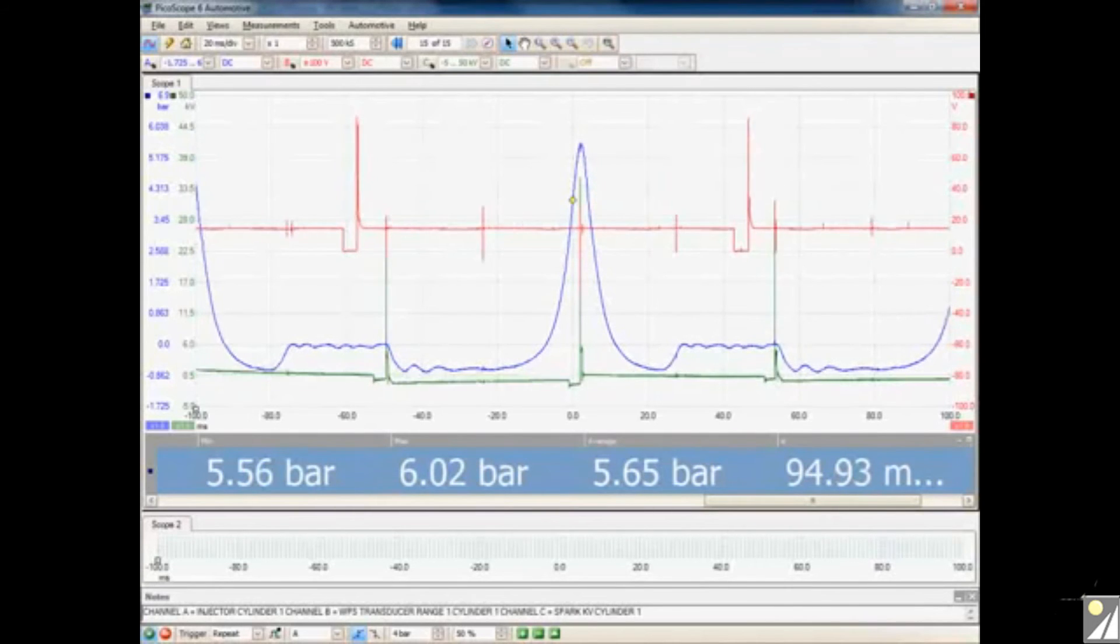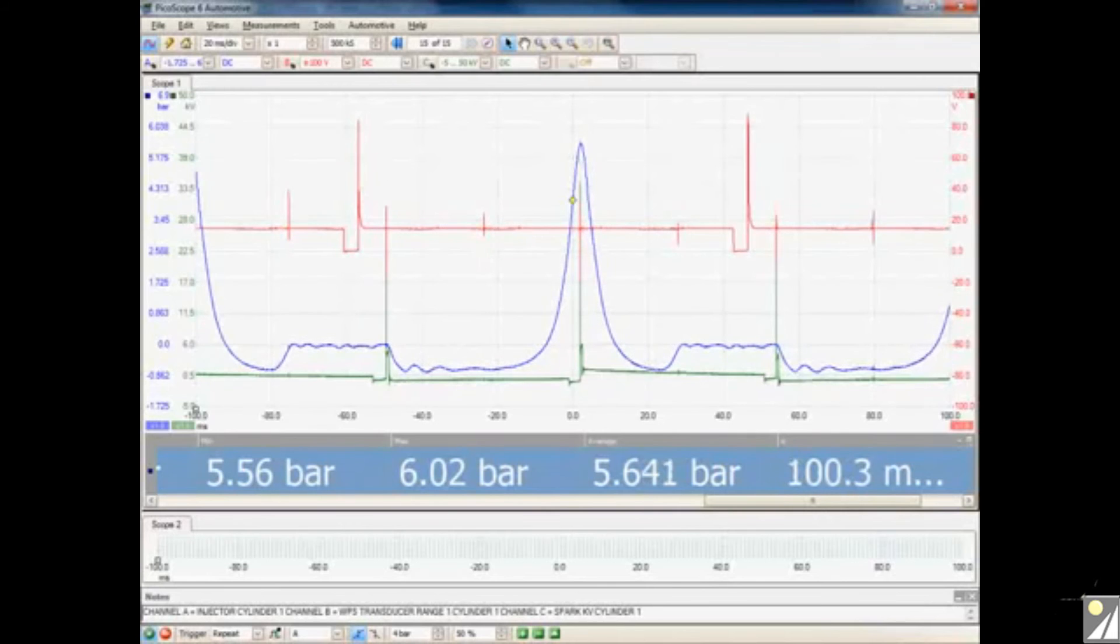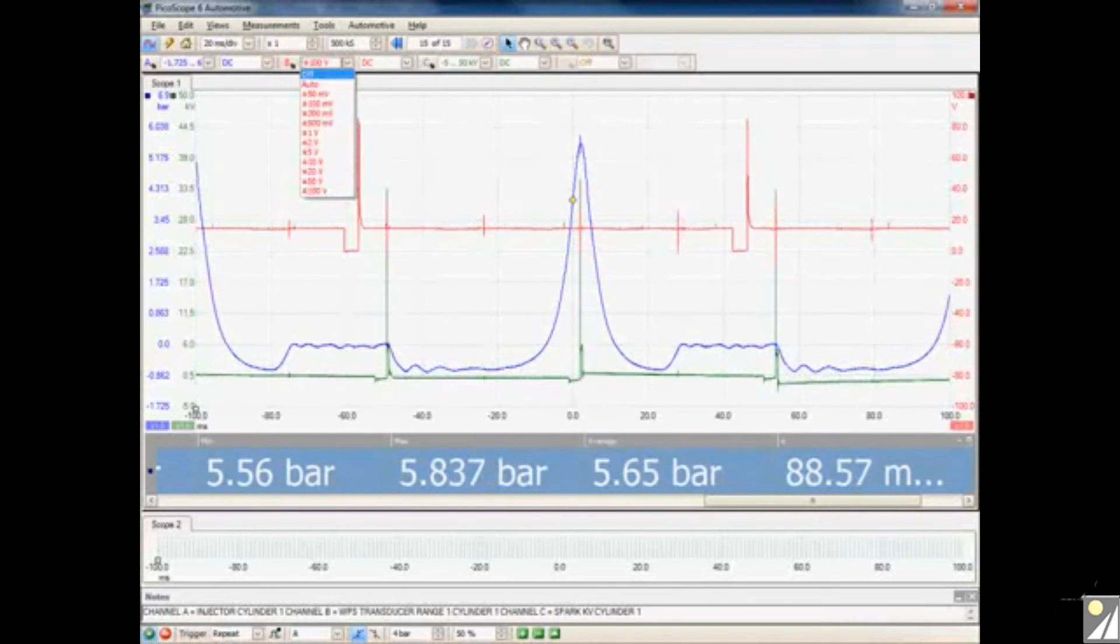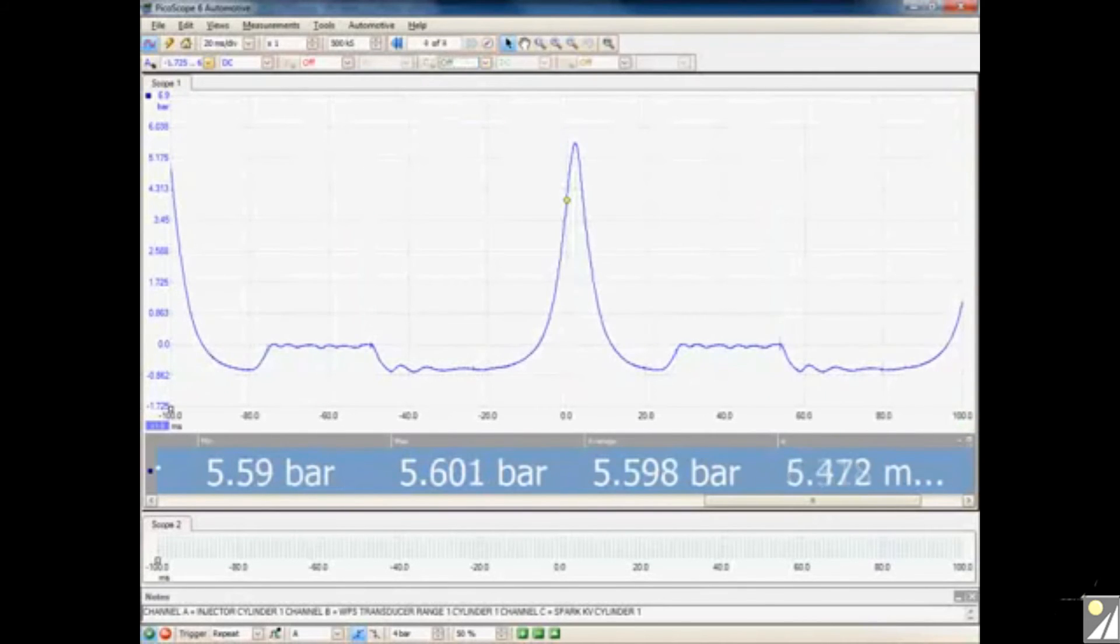So what I need to do is I need to just slightly tweak this waveform. I'm going to remove the injector signal as we don't need to see that anymore. I'm also going to remove the secondary signal as we don't need that either. I'm going to change the setting for the transducer as now we're going to be looking at a much higher pressure. So I'm going to go for the full range up to 34 bar.